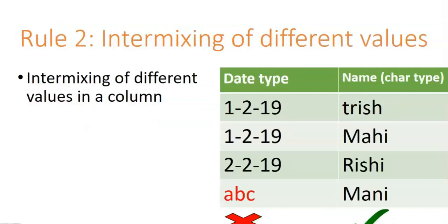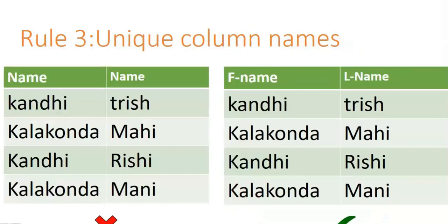Rule two is about not intermixing different data types in a column. For example, if a column is of date type, you cannot store string data in it. This is common sense. Though different data types are sometimes technically allowed, it is recommended to keep the same data type throughout a column. Don't intermix a column with different data type values.